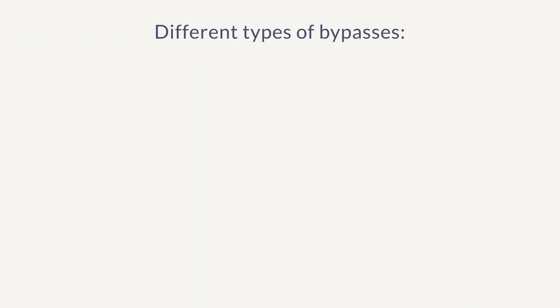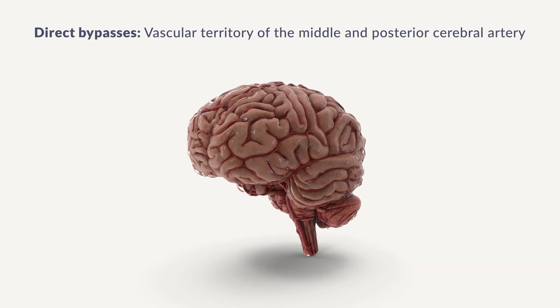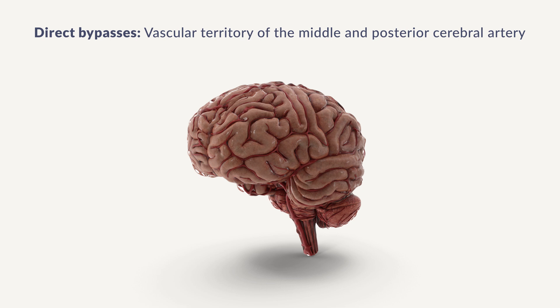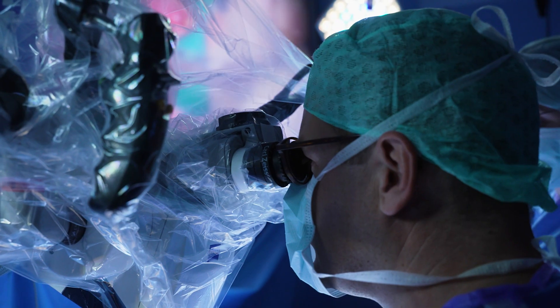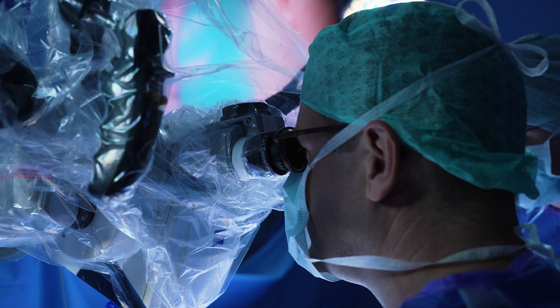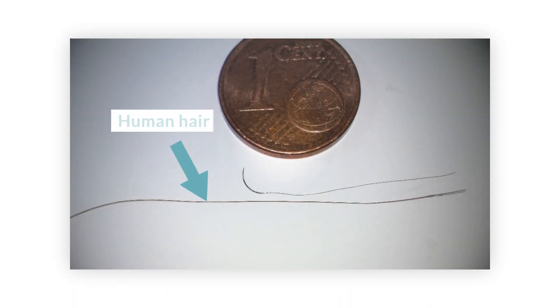When it comes to bypasses, a distinction must be made between direct and indirect bypasses. Direct bypasses are usually placed for the middle cerebral artery and the posterior cerebral artery of the brain. The temporal artery, which we use most frequently for bypass surgery, has a diameter of around 1 to 1.5 millimeters. The artery on the surface of the brain is of a similar size. We then connect the two vessels under the surgical microscope at maximum magnification with a suture significantly thinner than a human hair, with a total of six to eight single stitches.